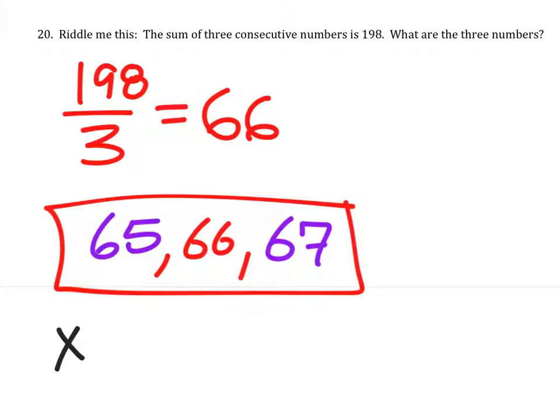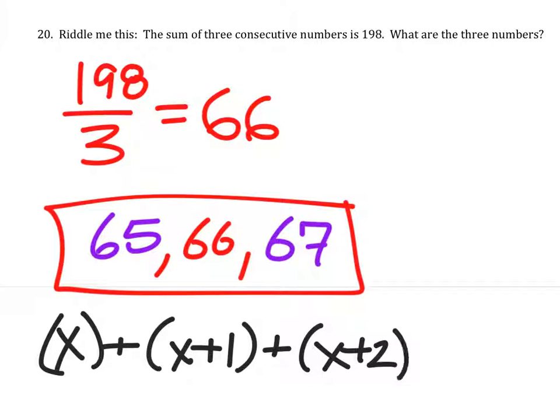Some of you guys may have used the equation. If this was the lowest number, you would have added that to the next highest number to the next highest number. And that would equal 198. Then you would just solve this equation.